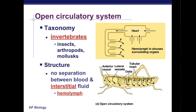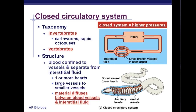The fact that we have both systems suggests they've been selected for by natural selection — they must offer survival benefits. An open circulatory system requires less energy due to its reliance on body movement to assist with circulation rather than pumping mechanisms. In a closed system, the high blood pressure produced by pumping fluid through the vessels allows for more efficient, rapid exchange of materials.